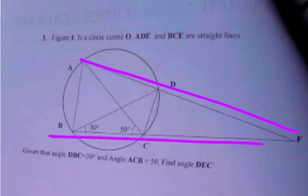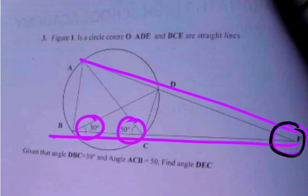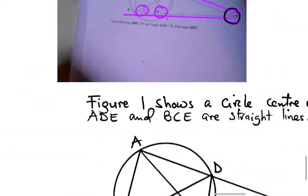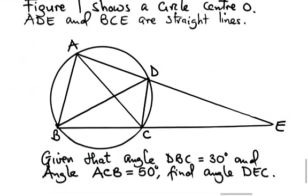BCE is a straight line. Now the angle DBC is 30 degrees and angle ACB is 50 degrees. Find the value of this angle here. This is the question.